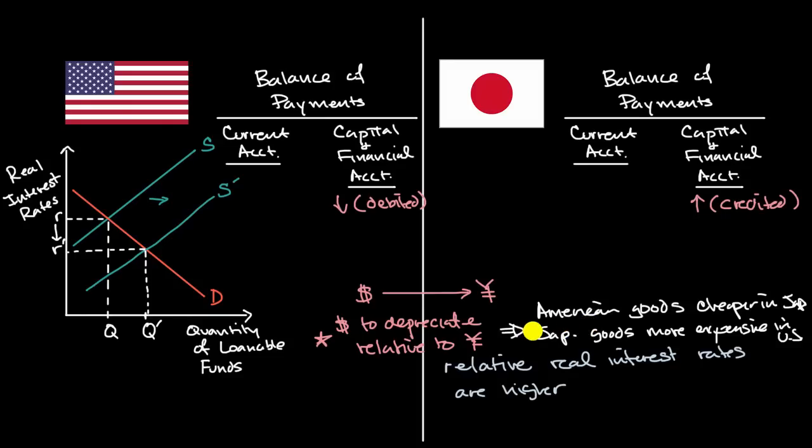And so what is going to happen? Well, in that situation, that means that the U.S. is going to export more to Japan. Their goods are now cheaper in Japan. Japanese goods are now more expensive in the U.S. So they're going to buy fewer Japanese goods and export more American goods.